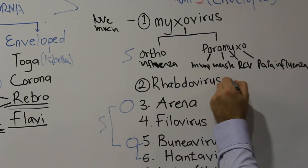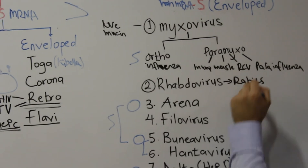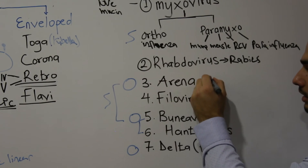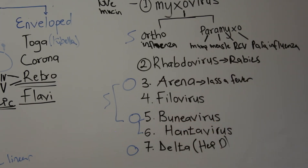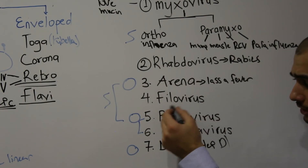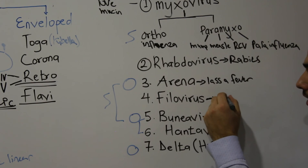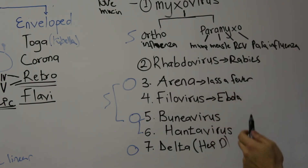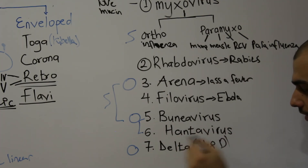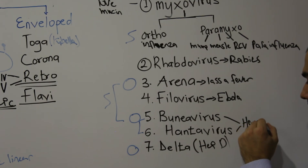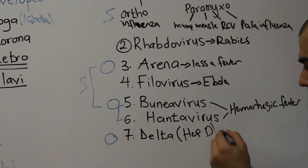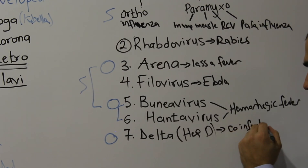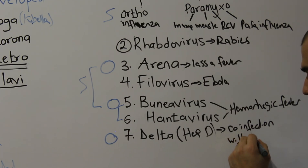Other negative-strand RNA viruses include: Rhabdovirus, associated with Rabies; Arenavirus, associated with Lassa fever; Filovirus, which contains Ebola virus and is associated with hemorrhagic fever; Bunyavirus and Hantavirus, both associated with hemorrhagic fever; and finally Delta virus, which is associated with co-infection with Hepatitis B. Remember, Hepatitis B is a DNA virus, and Delta virus requires it for co-infection.